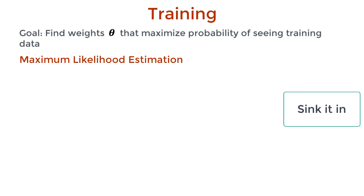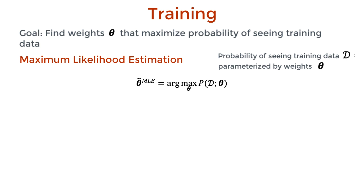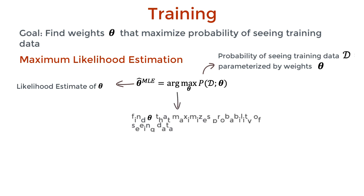Let's translate that into math notation. The p of D given theta is the probability of seeing our training data considering some parameters theta. Mathematically, the goal of training is to find the value of theta that maximizes this probability — that is, theta hat MLE, the maximum likelihood estimate of theta. This is what argmax does here in math notation: it returns the theta that maximizes the probability of seeing the training dataset.